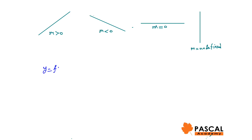y equals f of x is function notation. To find the value of the function when x is a, we simply substitute x by a in the equation of the function. The point (a, f(a)) is a point on the graph of the function.